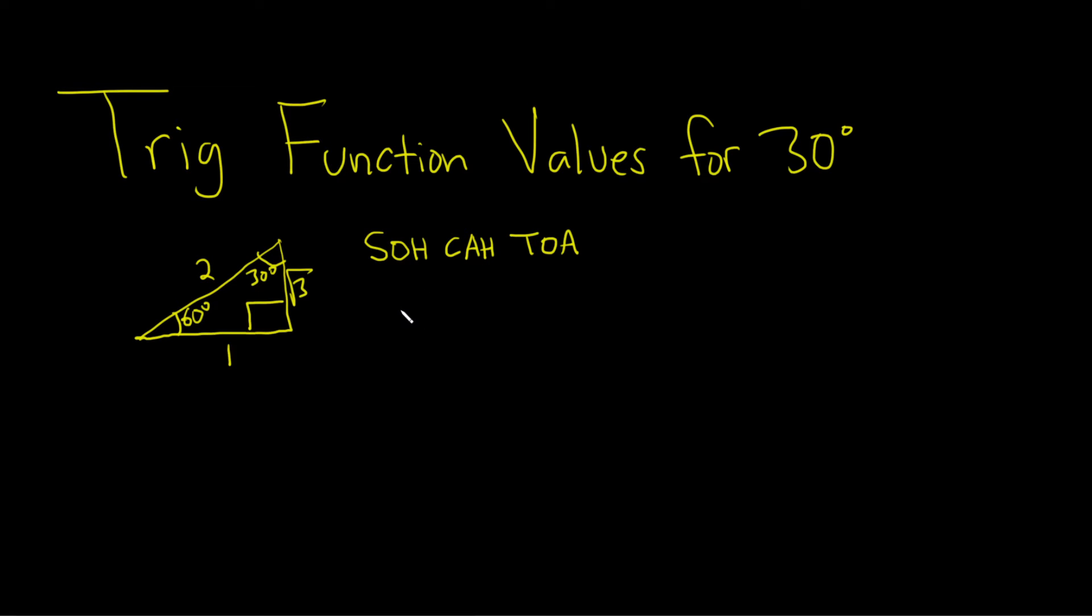So let's do sine first. Sine of 30 degrees. Sine is opposite over hypotenuse. The opposite of 30 degrees is 1. And the hypotenuse is 2. So sine of 30 equals 1/2.